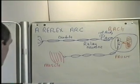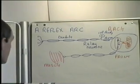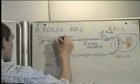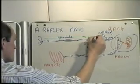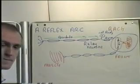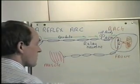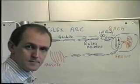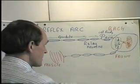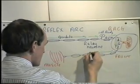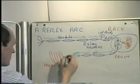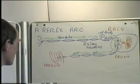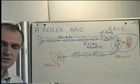What's also useful in these diagrams is to draw in the direction of the impulse. It's generated here, carried along the dendrite of the sensory neuron, carried into the spinal cord, carried across the spinal cord by the relay neuron, carried out from the spinal cord by the motor neuron, carried down to the motor end plate, where the impulse goes from the motor end plate across into the muscle.